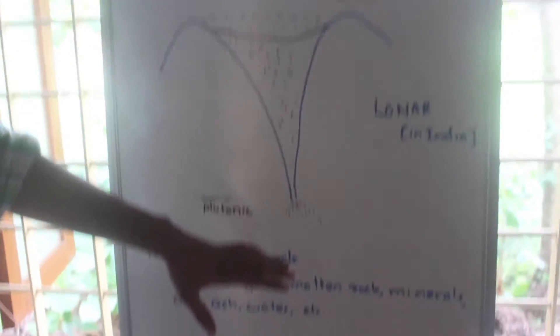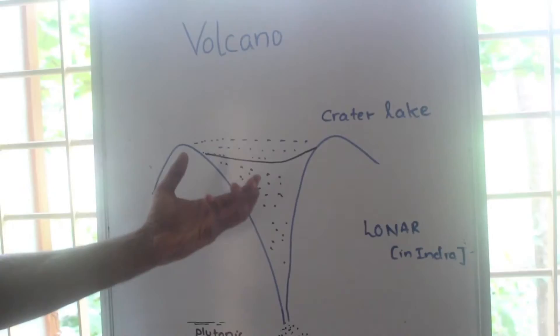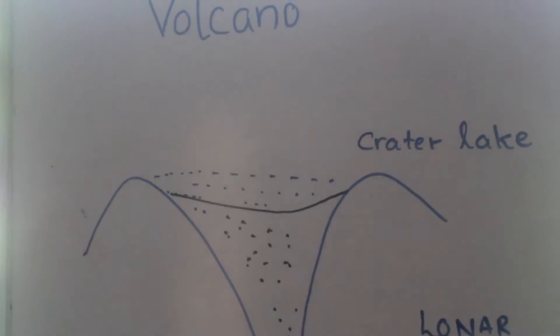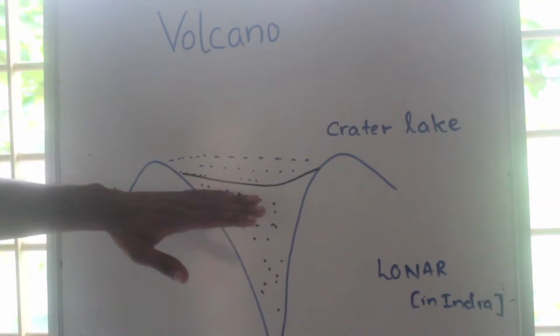Gases like chlorine, sulfur, etc. add to the explosivity of this magma. During solidification, the lava and magma coming out through the vent will undergo solidification.